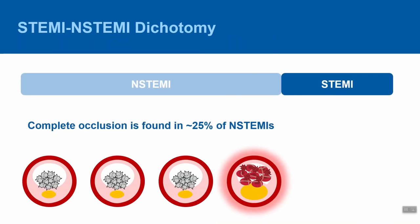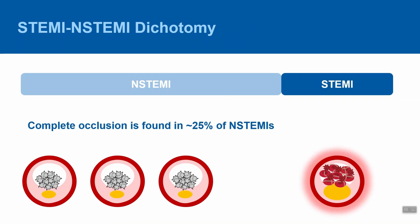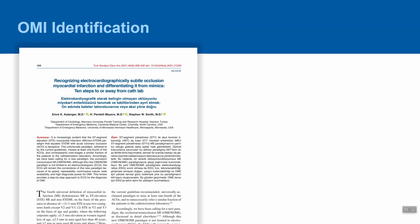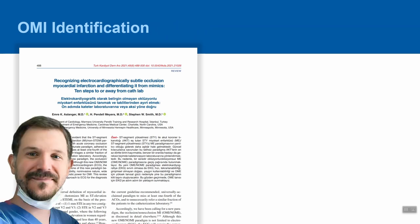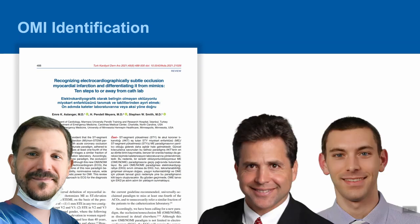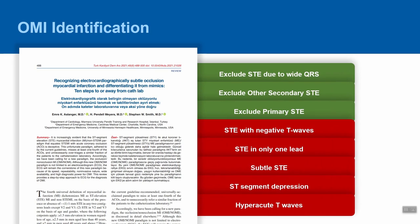So is there something we can do to identify this important subgroup of NSTEMIs with total thrombotic occlusion, to expedite their transport to the cath lab with the same urgency as STEMIs? One of the more elegant articles offering a solution is titled 'Recognizing Electrocardiographically Subtle Occlusion Myocardial Infarction and Differentiating it from Mimics: 10 Steps to or Away from the Cath Lab,' written by Turkish cardiologist Dr. Aslanger and his U.S. colleagues Dr. Stephen Smith and Dr. Pendell Myers, pioneers of the OMI-NOMI paradigm. This presentation will focus on eight of those ten steps.